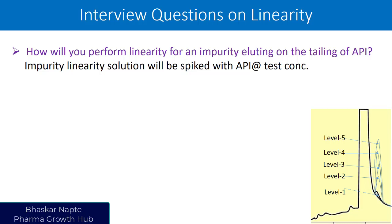Then, in another solution, spike the concentration of impurity at level 2, run the chromatogram, then level 3, level 4, and level 5. Then understand how the response is coming up. My response may get slightly reduced because of the interference from the API peak — and that is what I am expecting to happen. Am I getting a linear response for that particular impurity? In such situations, if you have an impurity eluting on the tailing of the API, you need to perform linearity in two sets: the first set for the rest of the impurities along with the API, and the second set only for the impurity eluting on the tailing of the API.